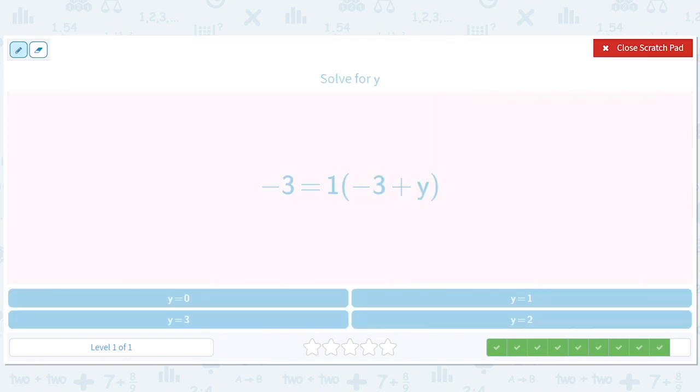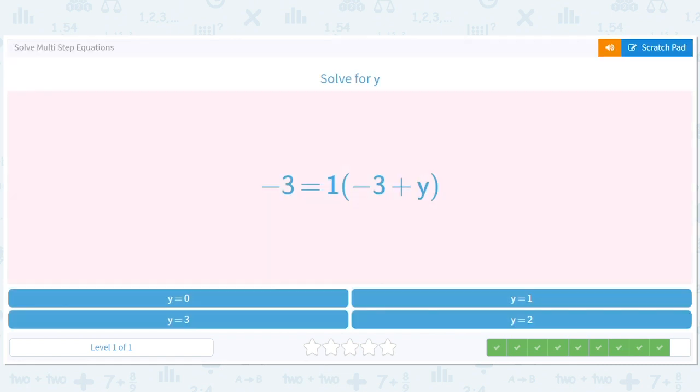Let's do this one. We're going to distribute this. This is going to give us negative 3 plus y because the 1 goes into both. And this will give us negative 3. And then we will add 3 to both sides. And we'll get y equals 0. So y equals 0. Mental check. If we put in a 0 here, does it work? Does 1 times negative 3 equal negative 3? Looks like it does. So y equals 0.